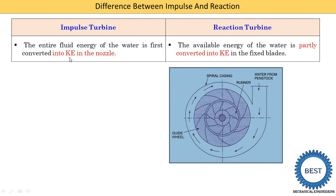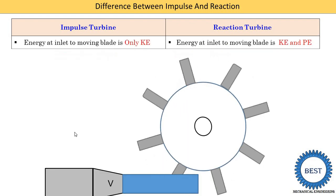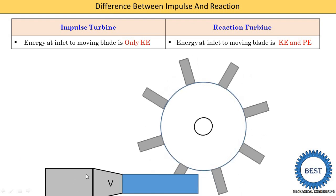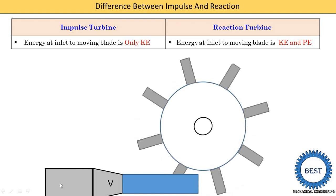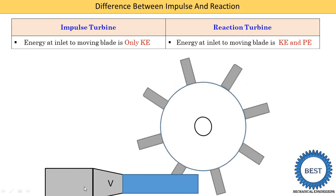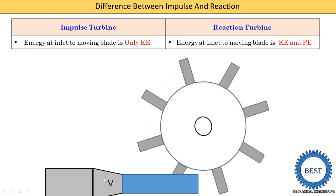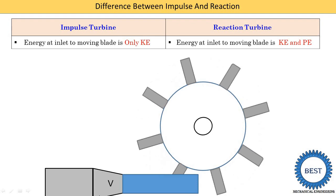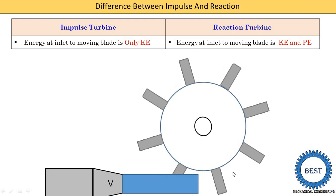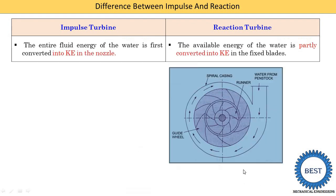The next point is that the entire fluid energy of the water is first converted into kinetic energy in the nozzle. Water comes from the reservoir through the penstock — this pipe is the penstock. In the penstock, water has two energies: pressure as well as kinetic energy. But the pressure energy of this water is converted into kinetic energy in the nozzle, which has a reducing diameter. At that point it is completely converted into kinetic energy, then it strikes the turbine runners.